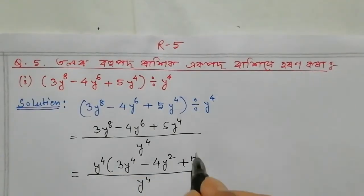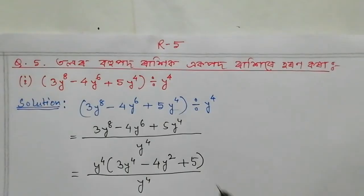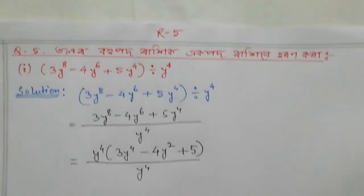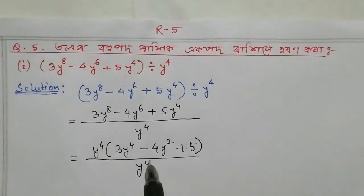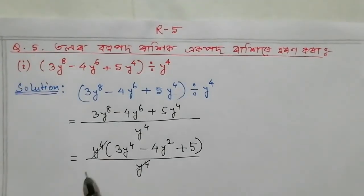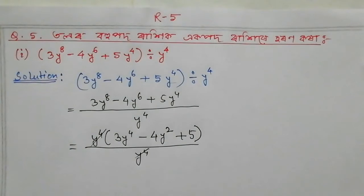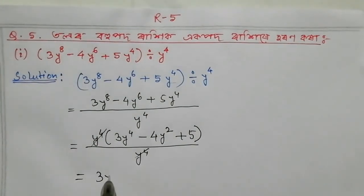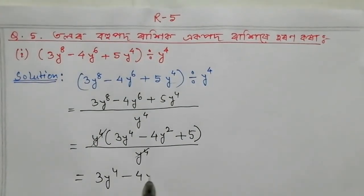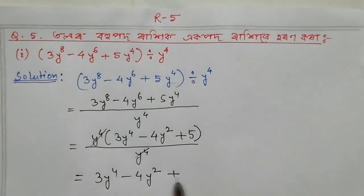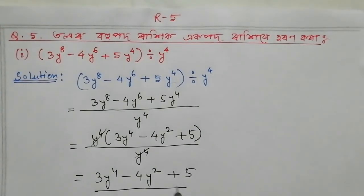y to the power 4 is about to keep the answer. So, y to the power 4 divided by y to the power 4 is a common factor. So my answer is 3y to the power 4, minus 4y squared, plus 5. So my answer is to keep the answer.